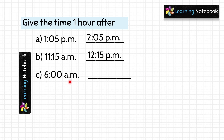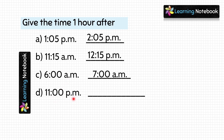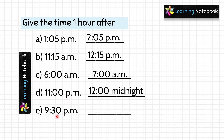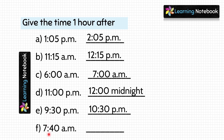Next, 6 AM — 1 hour after 6 AM will be 7 AM. Next, 11 PM denotes time in the night. So 1 hour after this will be 12 midnight. Next, 9.30 PM — 1 hour after this will be 10.30 PM. Lastly, 7.40 AM — 1 hour after 7.40 AM will be 8.40 AM.